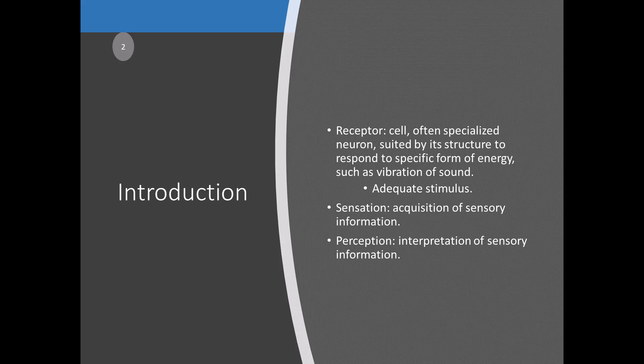This receptor would be a cell specialized for hearing. For this receptor to do its job, you need what we call an adequate stimulus — the energy form for which the receptor is specialized. Due to imperfect receptor specialization, other stimuli may produce receptor responses. According to Müller's doctrine of specific nerve energies, the neural mechanism determines the kind of sensory experience you will have; a sensory system will register its particular type of experience even if the stimulus is inappropriate.